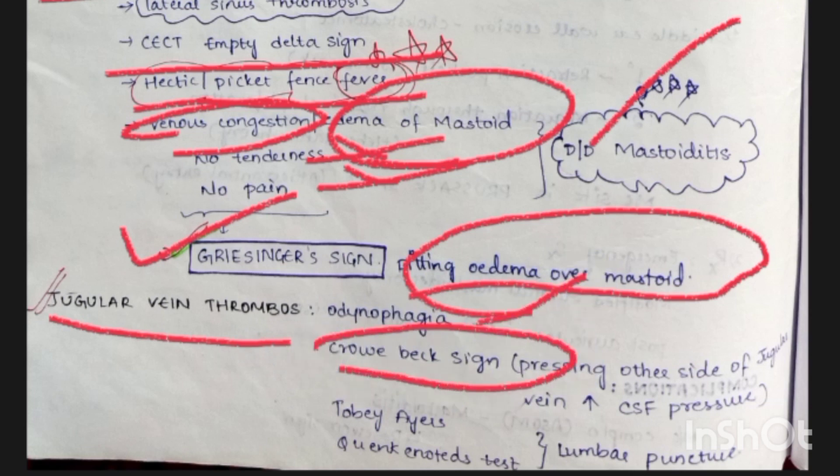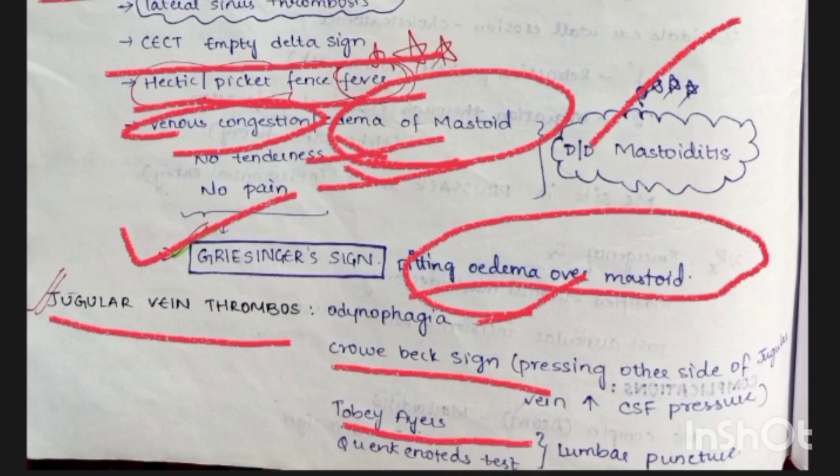In jugular venous thrombosis, we see odynophagia. Tests performed here are Tobey-Ayer test and Queckenstedt's test.